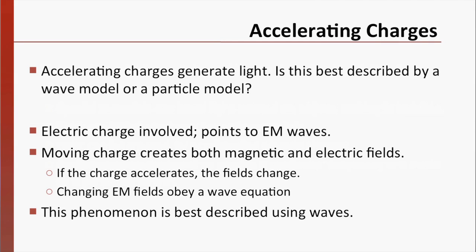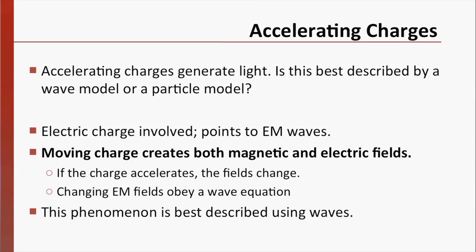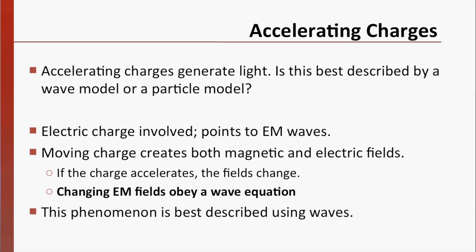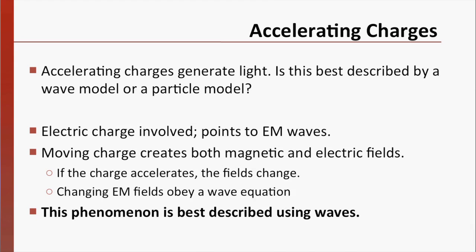Let's look at number three on that list, that an accelerating electric charge can generate light. Would the wave model or the particle model predict this result? The fact that an electric charge is involved definitely points toward an electromagnetic wave description of light. We know that moving electric charges create both magnetic and electric fields. If our charge is accelerating, then the fields that it creates must be changing. As we learned earlier in this course, changing electromagnetic fields obey a wave equation. It seems like this particular phenomenon is best described using a wave model.